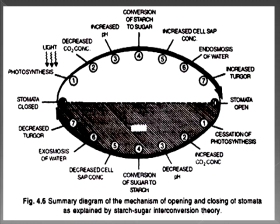The vice versa process occurs in dark conditions: photosynthesis doesn't occur, so CO2 concentration increases. CO2 combines with H2O to form bicarbonate, which breaks into H+ ions and bicarbonate ions — H+ ions increase, pH decreases. Decrease in pH causes conversion of sugar back to starch. Starch being insoluble, cell sap concentration decreases, OP decreases, exosmosis of water occurs, turgor pressure decreases, and stomata closes. This is all about the mechanism of stomatal movement as explained by the starch-sugar hypothesis.